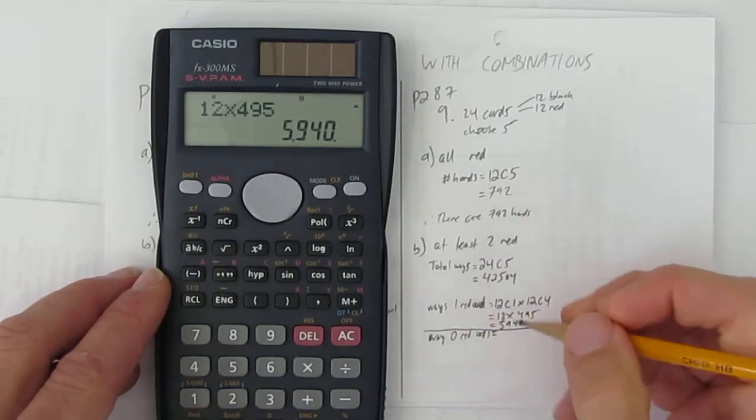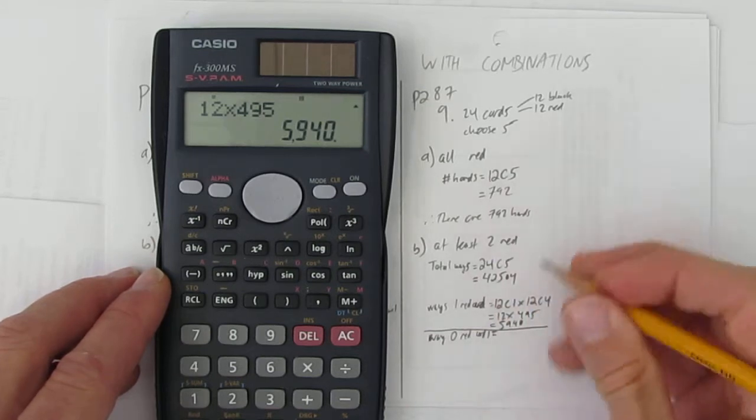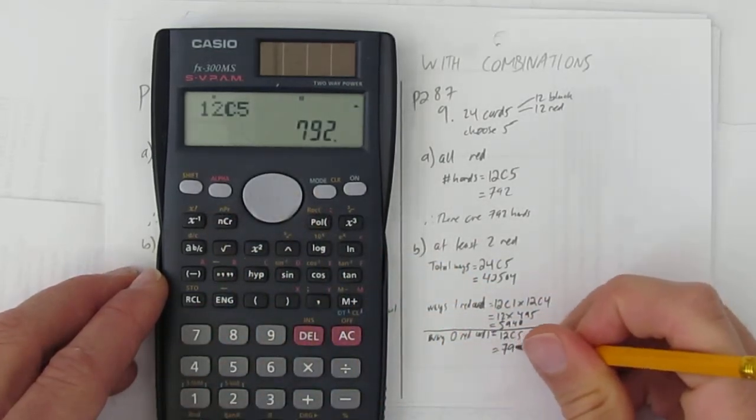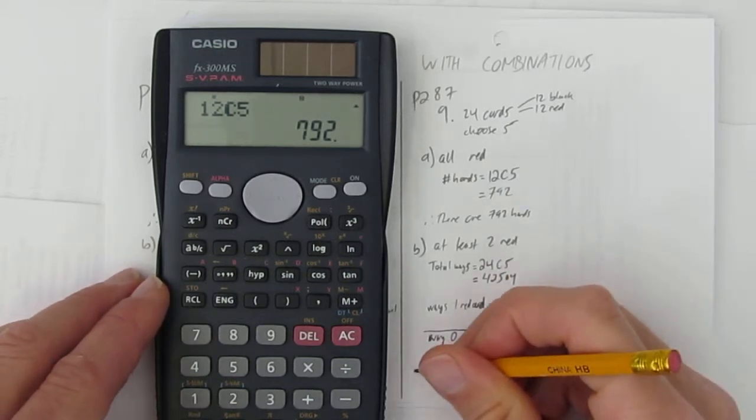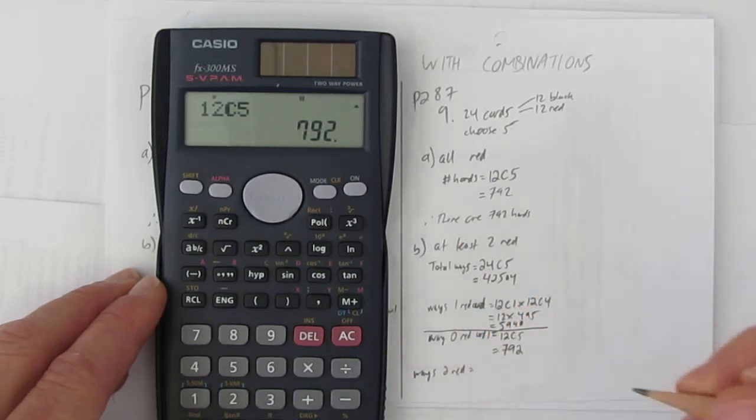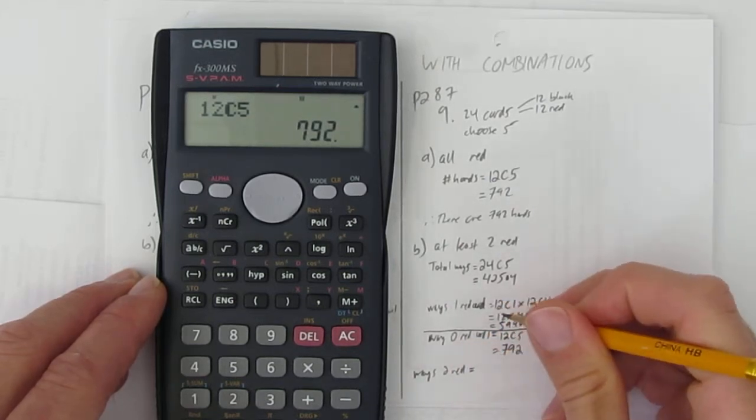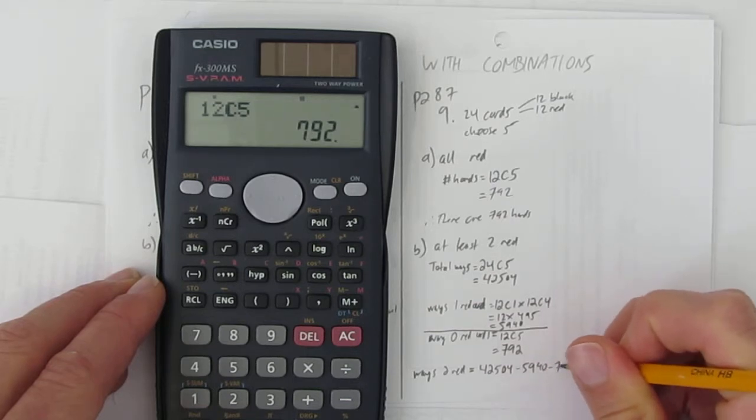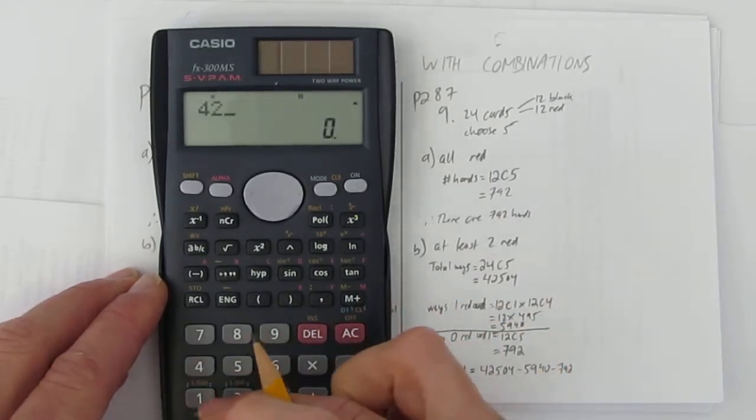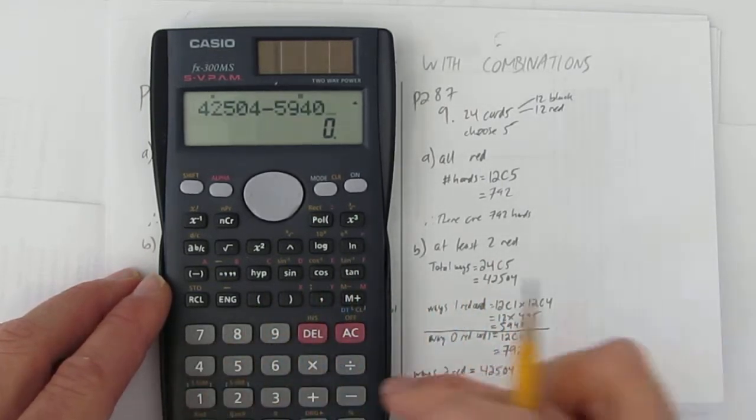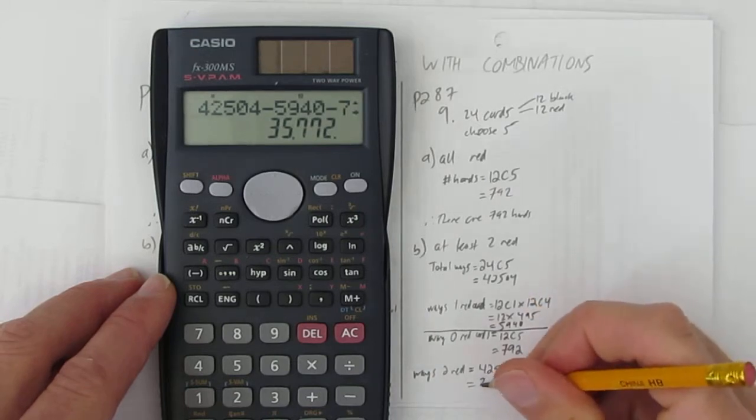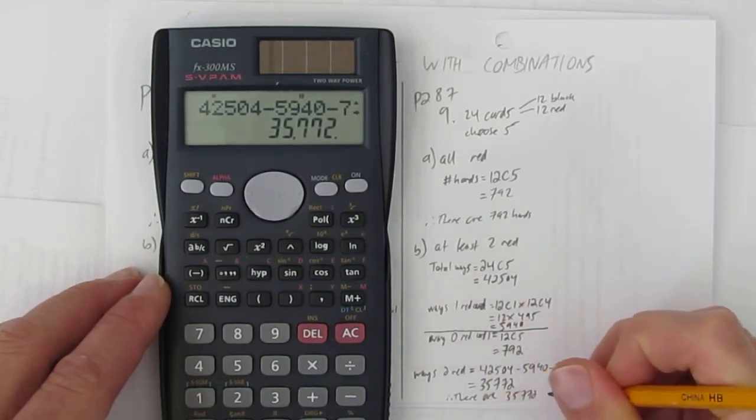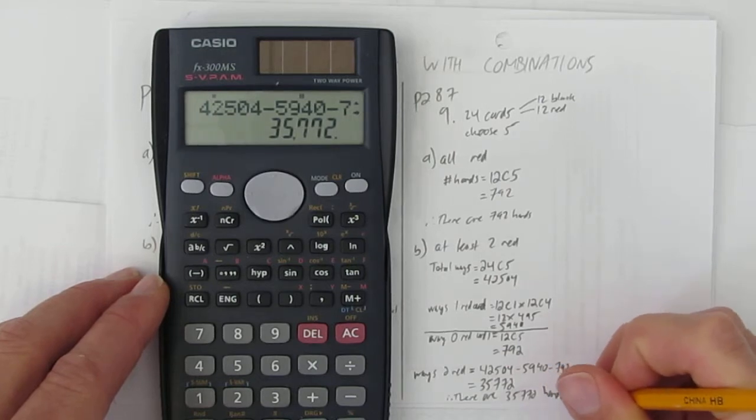How many ways can you have zero red cards? Very easy to calculate. If there's zero red cards, you just choose from the 12 black cards all five. What's 12 choose five? 792. So, how many ways can you have two red cards? It's just going to be the total number of ways. 42,504 minus one red card and minus no red cards. So, what's 42,504 minus 5940 minus 792? And I get 35,772. Therefore, there are 35,772 different hands this way. That's part B.